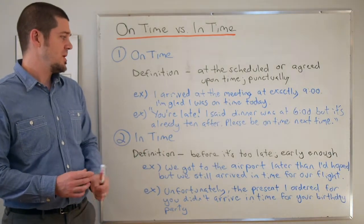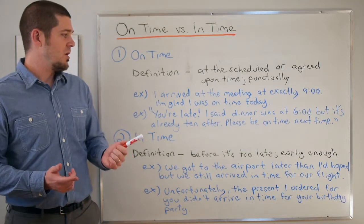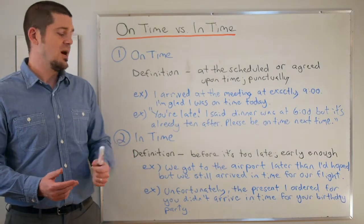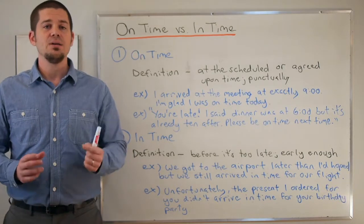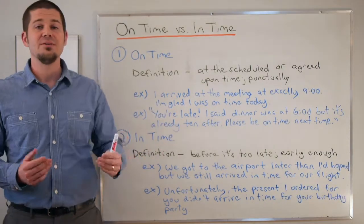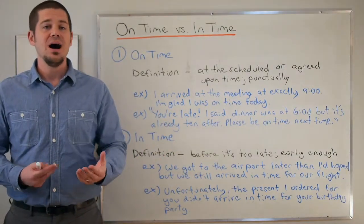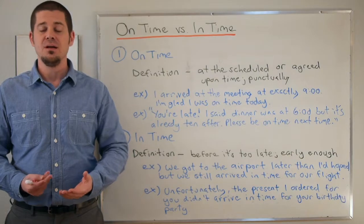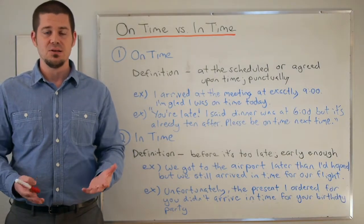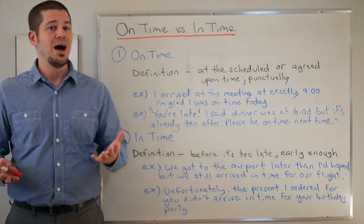Here's another example: 'You're late. I said dinner was at six o'clock but it's already ten after. Please be on time next time.' Dinner was supposed to be at six. I arrived at six ten — ten after six. So I was not on time for the meal. Everybody else already started eating at six o'clock — that's when dinner was served — so I was not on time; I was late.